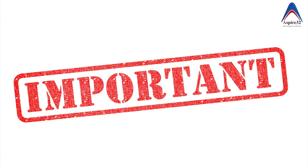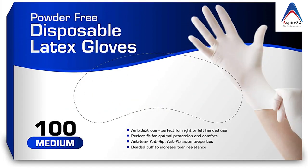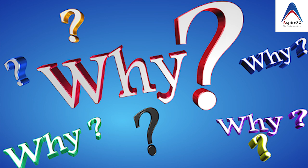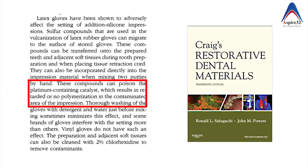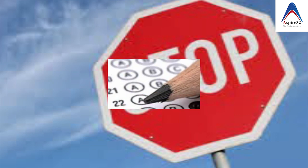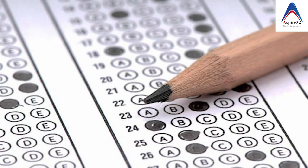Another important MCQ for addition silicone: latex gloves can inhibit its setting. The reason is that sulfur compounds from latex rubber inhibit the platinum-containing catalyst, which is essential for setting of the impression material, thereby preventing the setting reaction. This is very commonly asked in the exam.